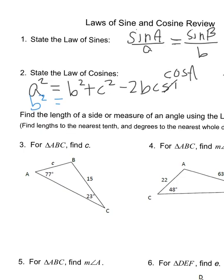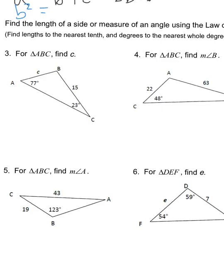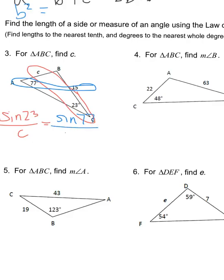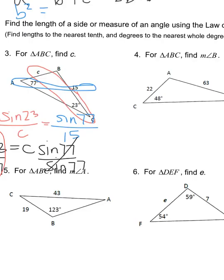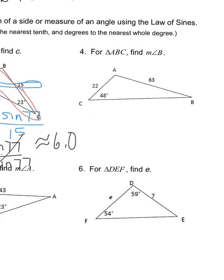This problem says to find the length using law of sines. Using sine of 23 is to side C as sine of angle 77 is to side 15, you cross multiply to get 15 sine 23 equals C sine 77. Divide both sides by sine 77 — these cancel out. Put 15 sine 23 divided by sine 77 in your calculator and you get approximately 6.0, rounded to the nearest tenth.